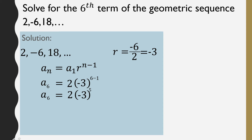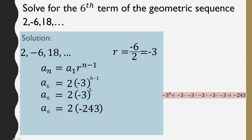Next, simplify negative 3 raised to the power of 5: negative 3 times negative 3 times negative 3 times negative 3 times negative 3, which equals negative 243. Then multiply 2 times negative 243, and the answer is negative 486. So negative 486 is the 6th term of the geometric sequence 2, negative 6, 18, and so on.